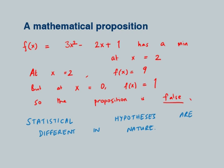To contrast: a mathematical proposition — say some function has a minimum — is either true or false, with no ambiguity. You can verify it by whatever means. But statistical hypotheses are different in nature.